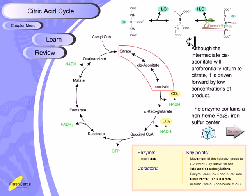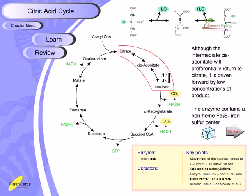For this reaction to proceed forward, we need to remove the products. If a reaction has a positive ΔG value, we can drive it forward in two ways: push it by increasing substrate concentration, or pull it by removing products. In this case, the reaction is driven by quick removal of product. The enzyme responsible is called aconitase, and a key point is the movement of the hydroxyl group to C2, which eventually allows for two keto-acid carboxylations.